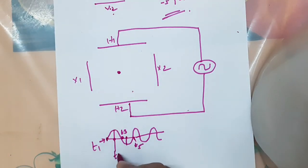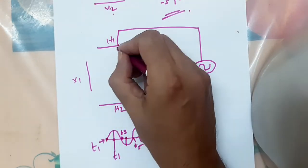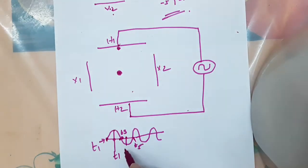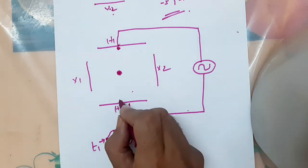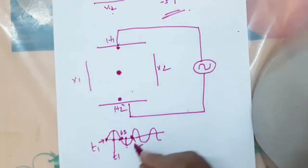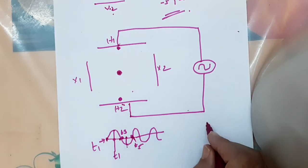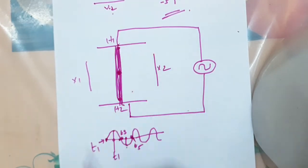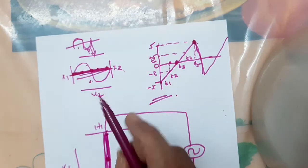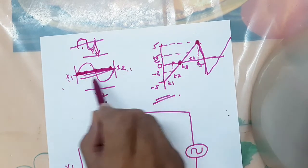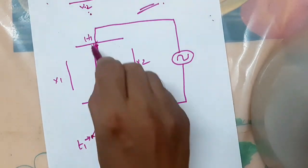At T3, the voltage is again zero, so the spot moves to center. At T4, the lower plate is at maximum, so the spot is at maximum downward. At T5, it is zero again. Since the waveform is continuous, the spot moves continuously up and down — we are getting the y-axis. If there is no horizontal voltage and we apply sawtooth, we get the x-axis. If we apply sine wave, we get the y-axis. When both voltages are given, we get the resulting position of the waveform.